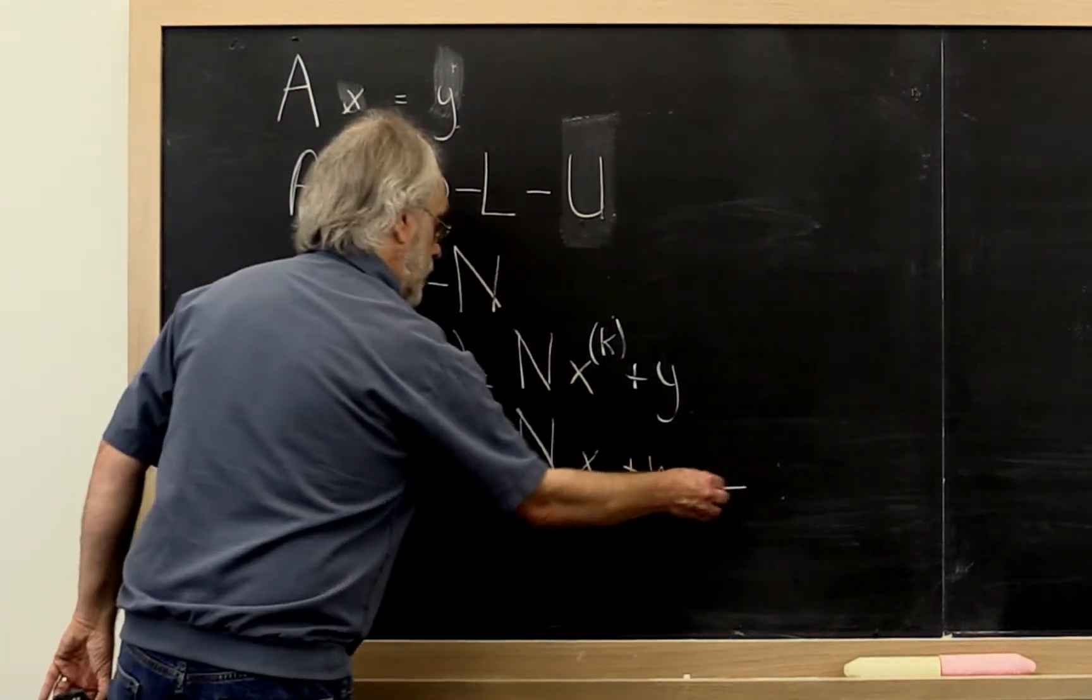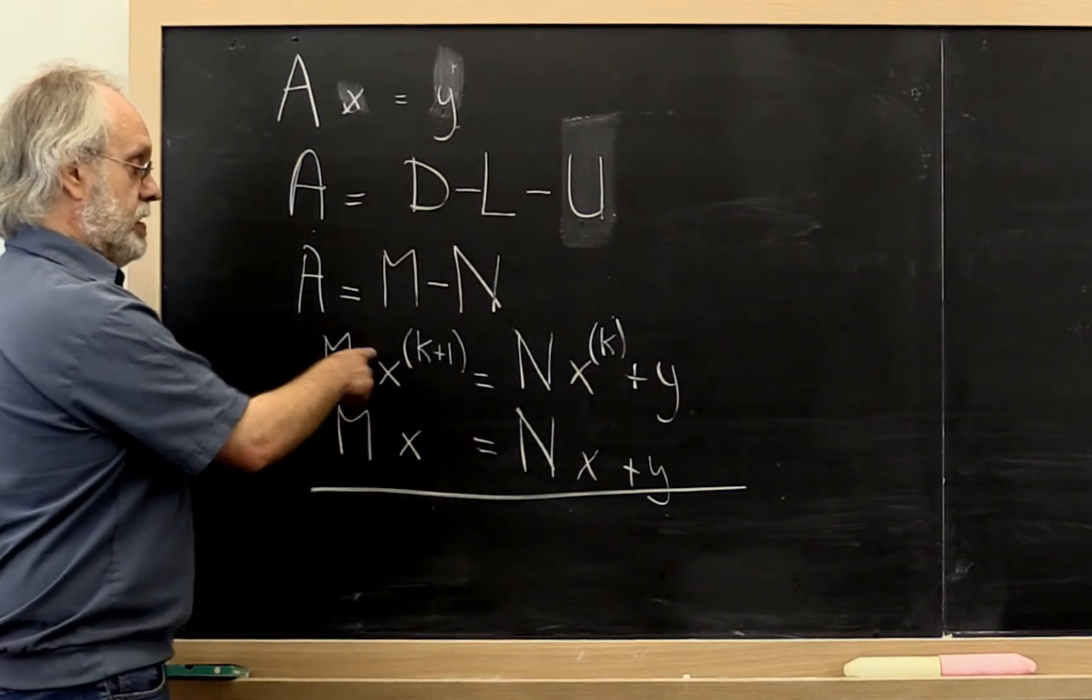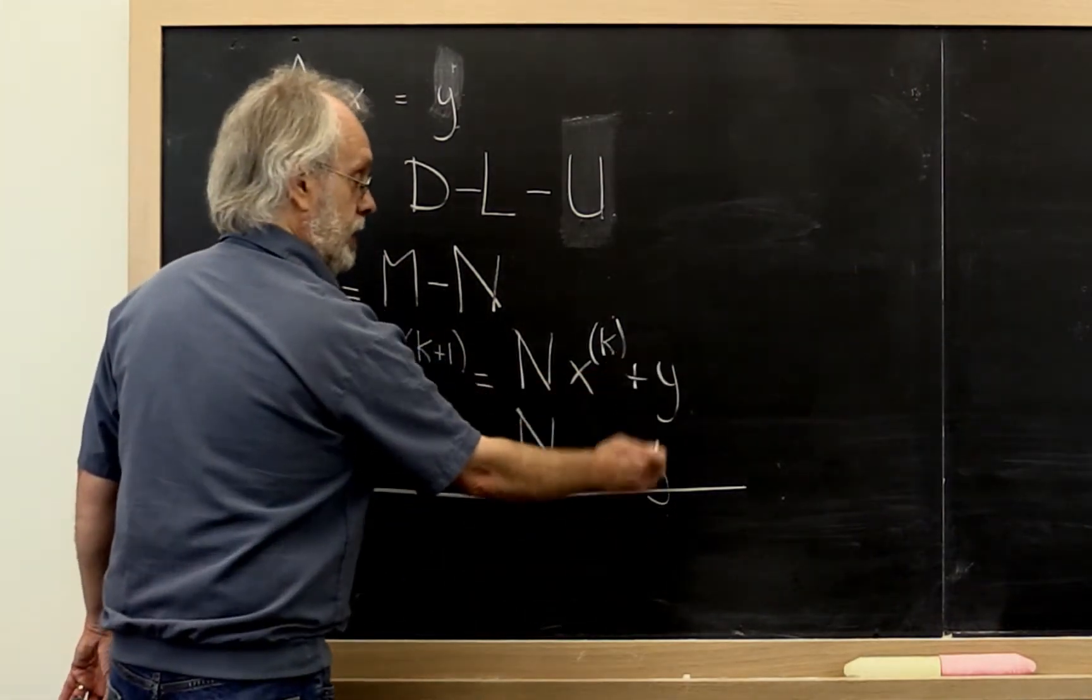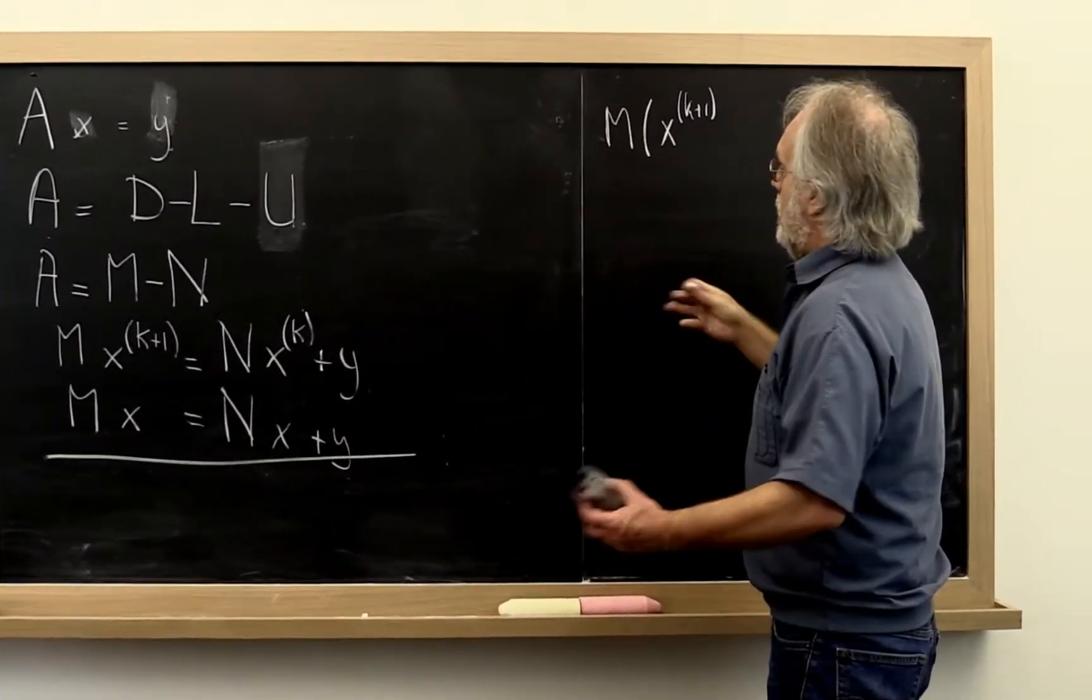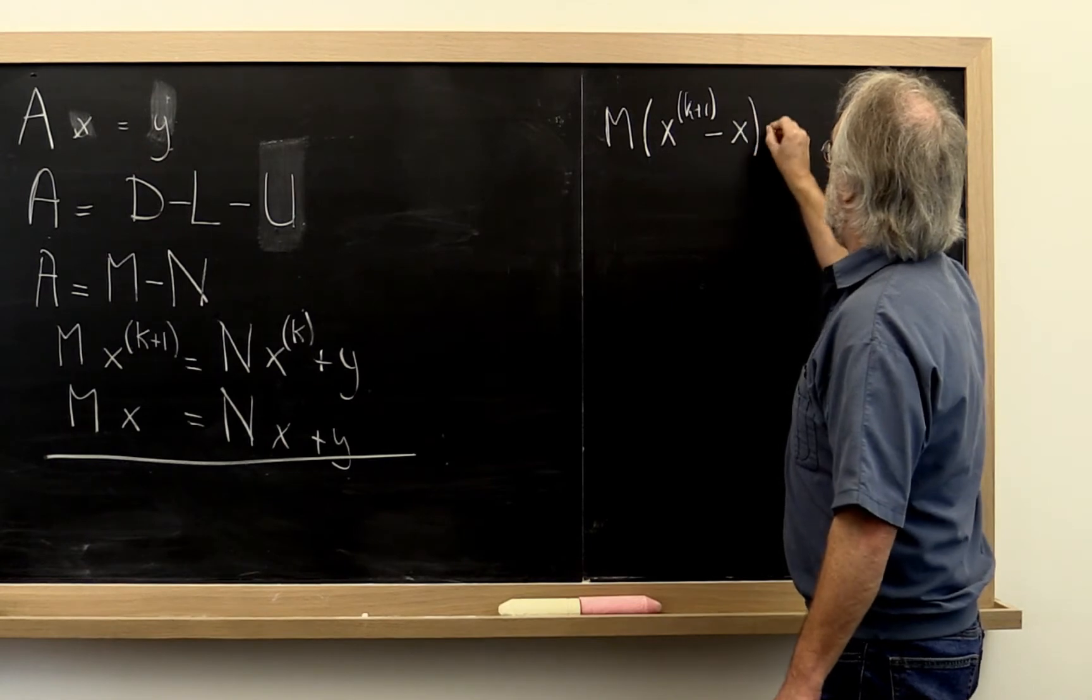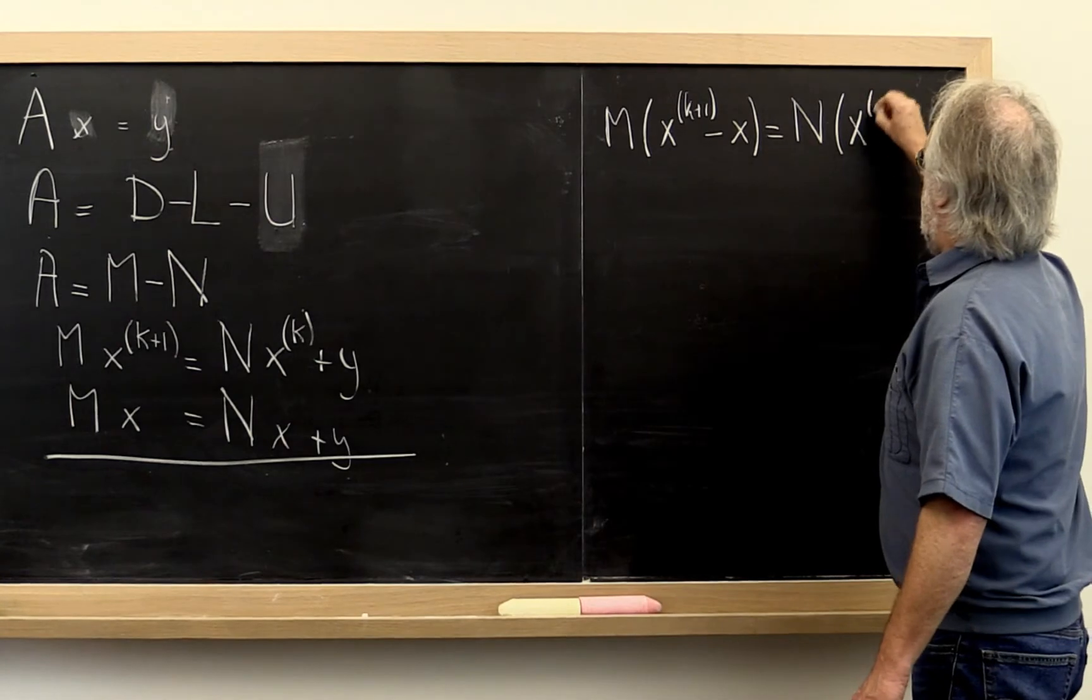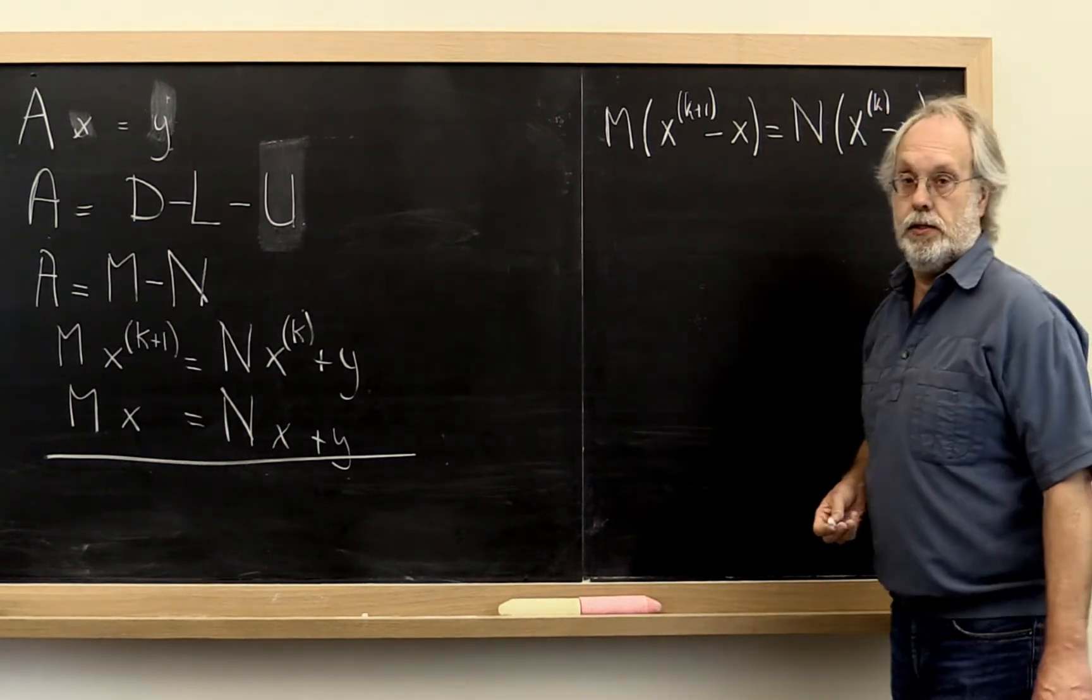What you can then do is take this equation and subtract it off of that equation. Happily, the Y's cancel each other. And what you get is that M times the quantity X_k minus the actual solution is equal to N times X_k minus the actual solution.